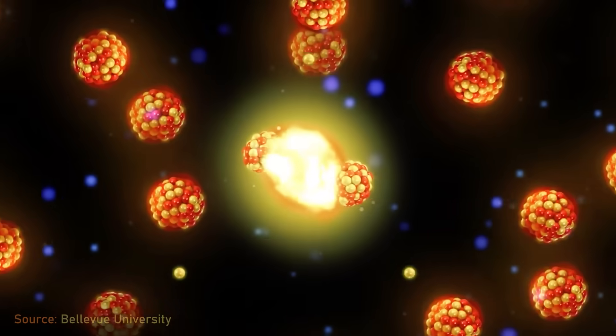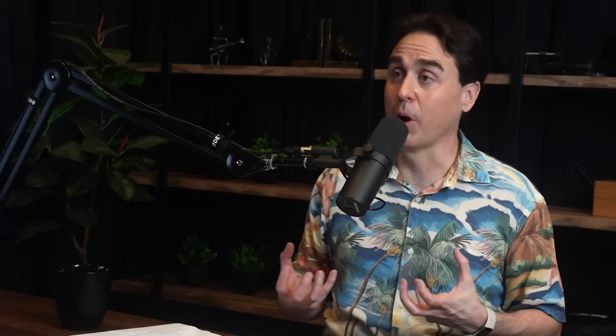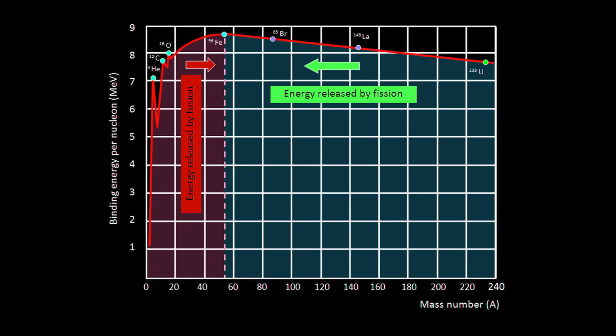Fission is the exact opposite — you're taking the heaviest elements in the universe: uranium, plutonium, things so heavy and with so many internal protons and neutrons that they're barely held together. They're fundamentally unstable or radioactive. If you take a uranium-235 or plutonium-239 nucleus and add a neutron, that unstable large nucleus breaks into pieces. All those pieces have slightly less mass than the initial uranium or plutonium did, and again E=mc² means a tremendous amount of energy is released.